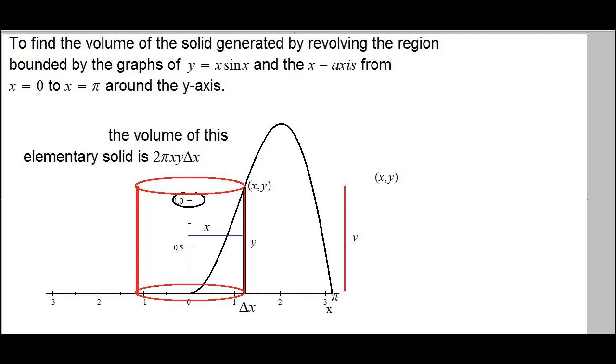Now if we go ahead and take our Riemann sums and take the limits, then everything added would be 0 to π, 2πxy dx. And then just substitute the value of y here, which is x sin x, so it makes it x² sin x.